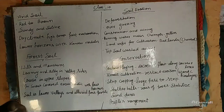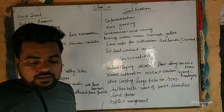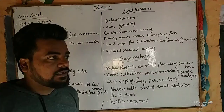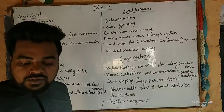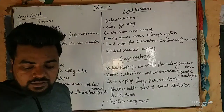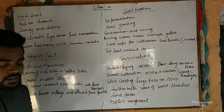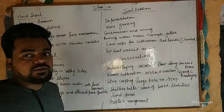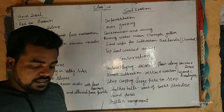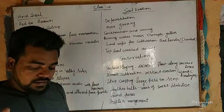Today we will discuss Arid Soil in detail. Arid Soil ranges from red to brown in color. Arid Soil is generally sandy in texture and saline in nature. The sand content is very high, and in some areas the salinity is also very high.